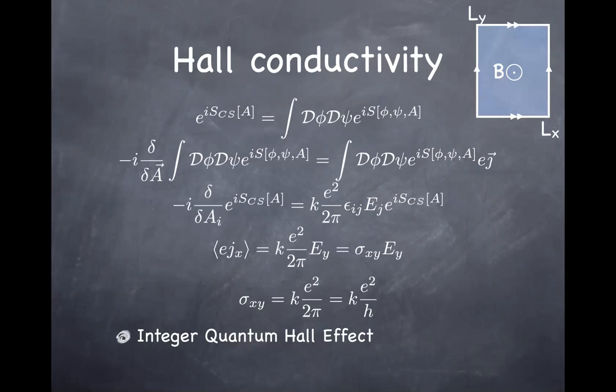Student: Is it true that we can also write the Chern-Simons term in any odd dimension? That's correct. You can write it in one dimension — and that turns out to be nothing but the coupling of the point particle to the vector potential, which is what we used this morning when we talked about the magnetic monopole. So it can be considered a one-dimensional Chern-Simons term.